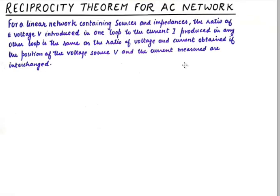Let's look at the statement for Reciprocity Theorem. It states that for a linear network containing sources and impedances — and by sources we mean voltage sources — the ratio of a voltage V introduced in one loop to the current I produced in any other loop is the same as the ratio of the voltage and current obtained if the position of the voltage source V and the current measured are interchanged.